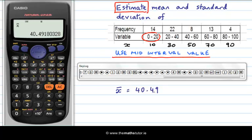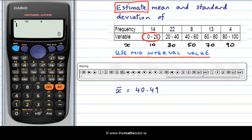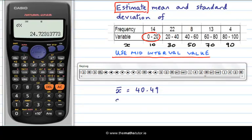And hit AC, Shift, 1, 4 for var, and 3 for sigma X, and we see that our standard deviation is 24.72, and we leave it at two decimal places.